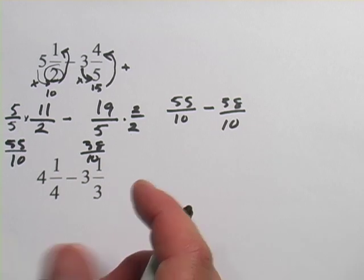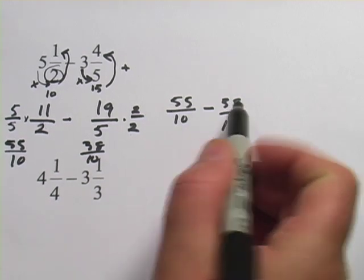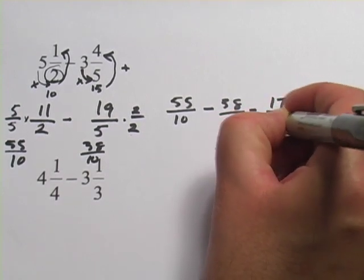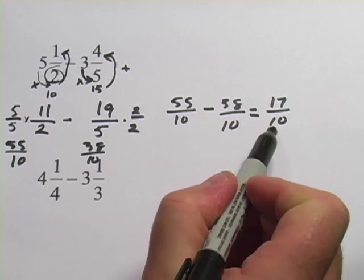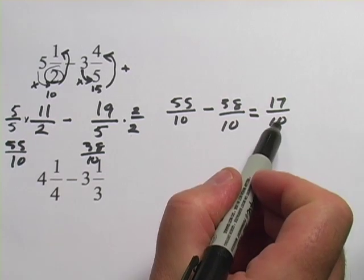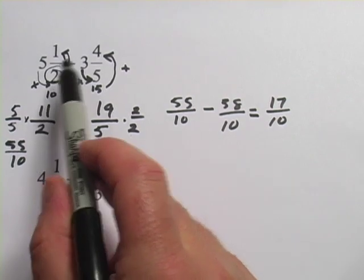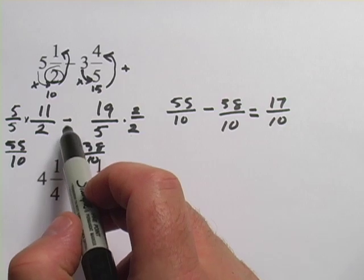Now it's simple. All we have to do is take 55 minus 38 and put that over 10. And that should be 17. Not quite done yet. We have 17 over 10. But this is an improper fraction. And we want to convert it back to a mixed number. We should convert it back to the kind of format it was in when the problem started.